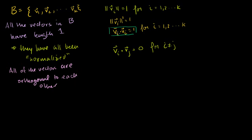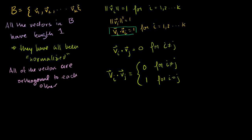They're not orthogonal to themselves, because they all have length 1 — dotting with itself gives 1. Dotting with some other vector in the set gives 0. We can write it as: vi dot vj equals 0 for i not equal to j, and equals 1 for i equal to j. Since all vectors are normalized and orthogonal to each other, we have a special word for this: this is called an orthonormal set. B is an orthonormal set.